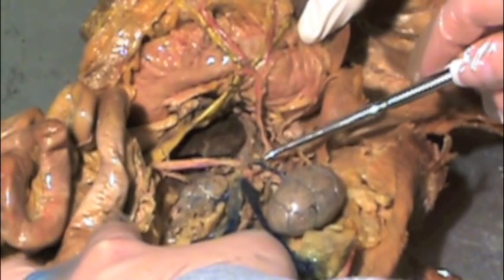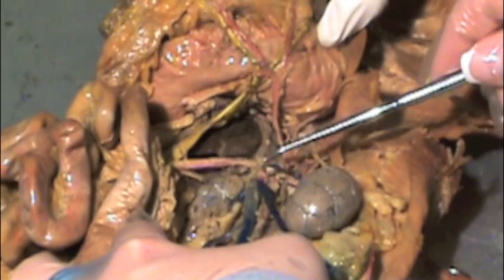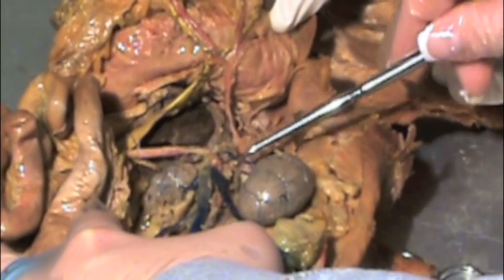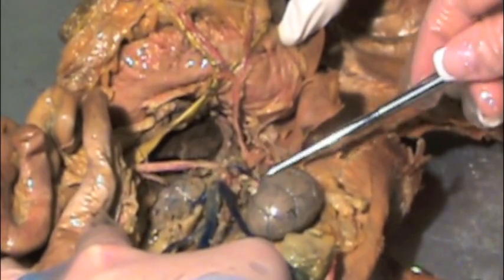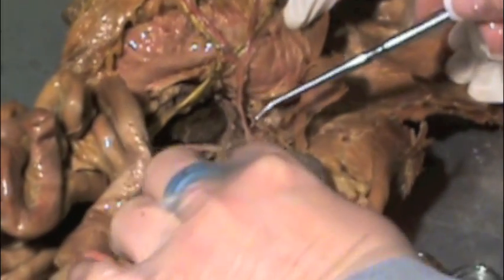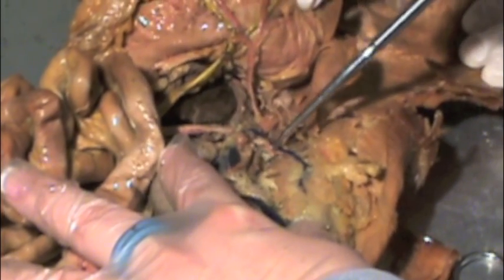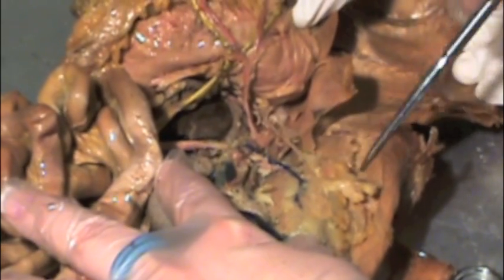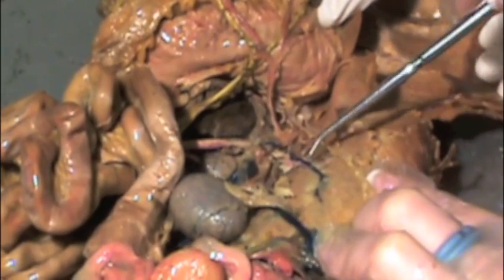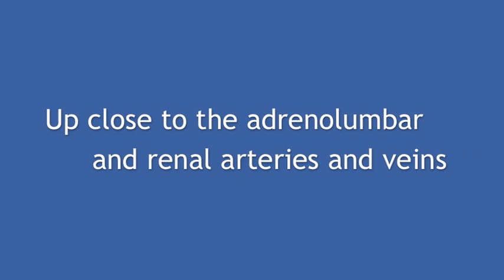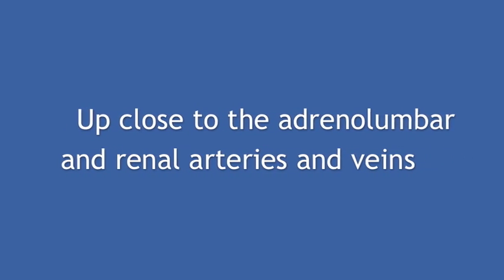Moving back to our abdominal aorta, we're going to locate our adrenal gland, which is seen here. The next branches off of the abdominal aorta are the adrenal lumbar arteries. Lying on top of the adrenal gland, you can see the adrenal lumbar vein; the artery lies beneath. If we reflect the kidney back, we can better see these vessels. The adrenal lumbar artery and vein feed out into the dorsal body cavity wall and serve the lumbar region as well as the adrenal glands. Here's a close-up view of that adrenal gland again, with the adrenal lumbar vein lying across the top.